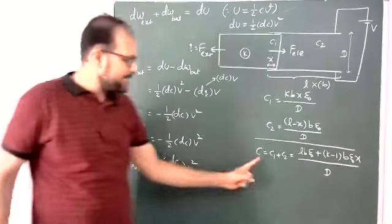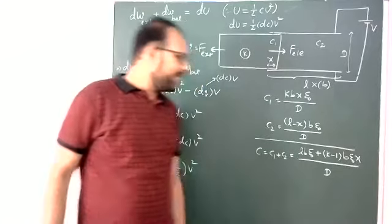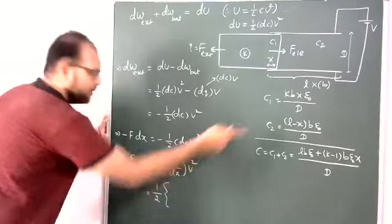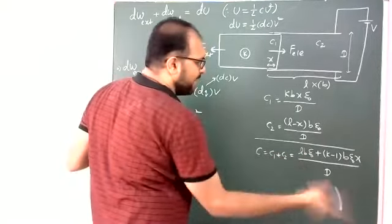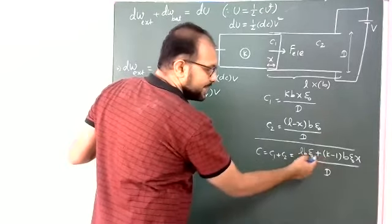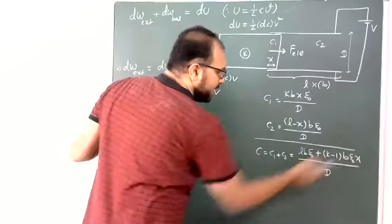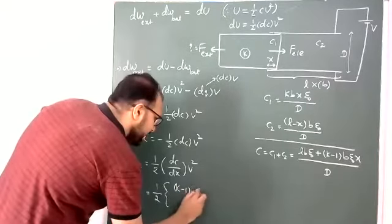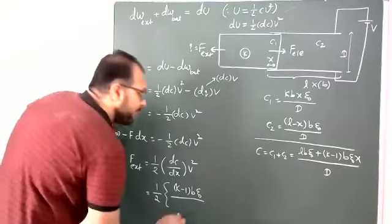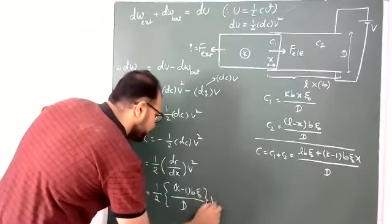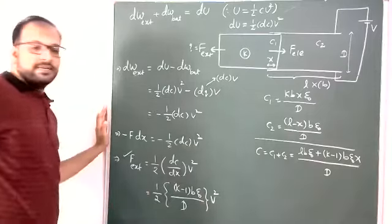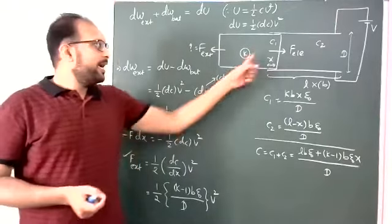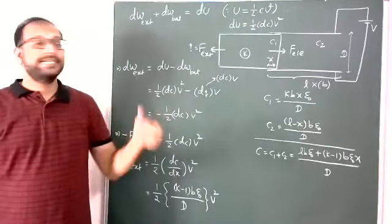But what is dC/dx? We already know C. You need to differentiate this. After differentiating, we get the expression for external force. This is the external force required to insert the dielectric slab slowly into a parallel plate capacitor which is connected to a battery.